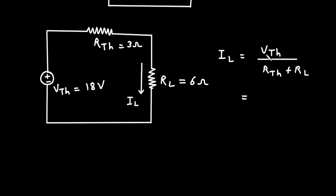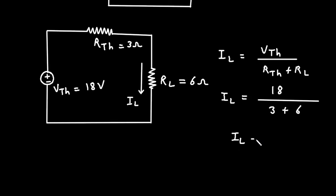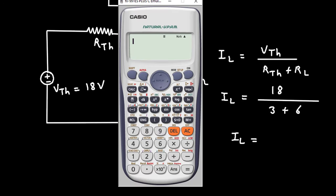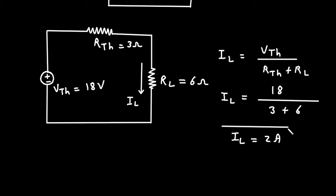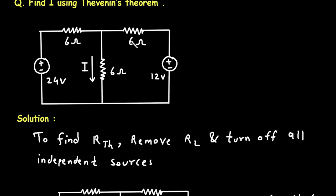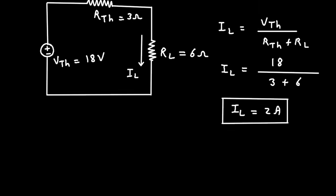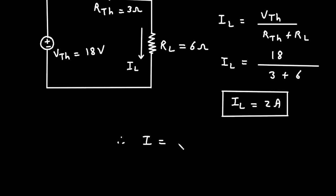Substituting the values: IL = 18 / (3 + 6) = 18 / 9 = 2 Ampere. Therefore, the value of current I is 2 Ampere.